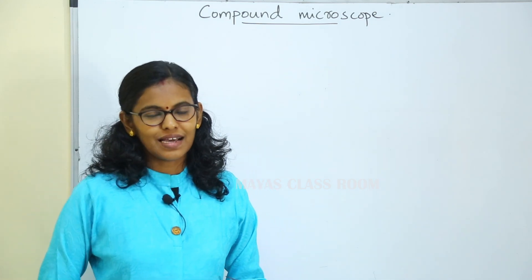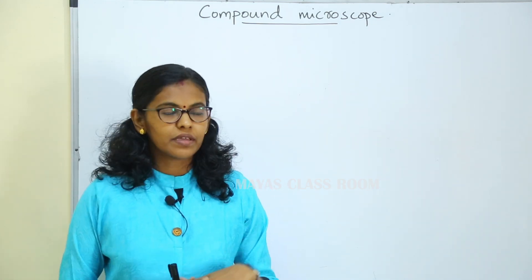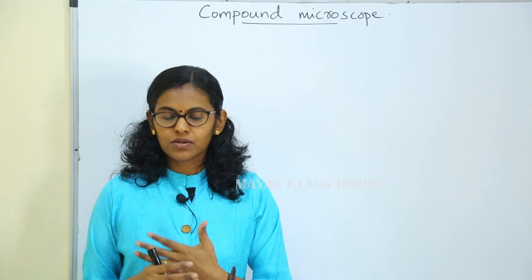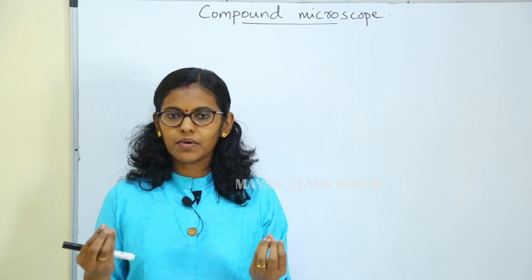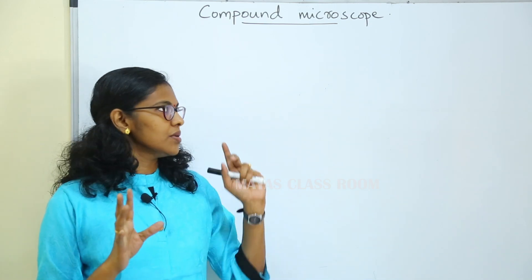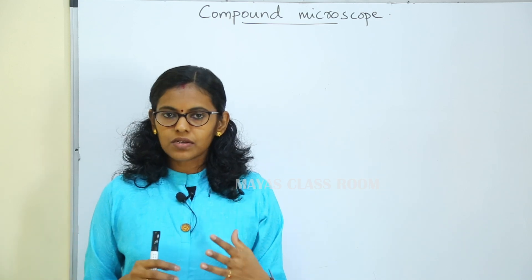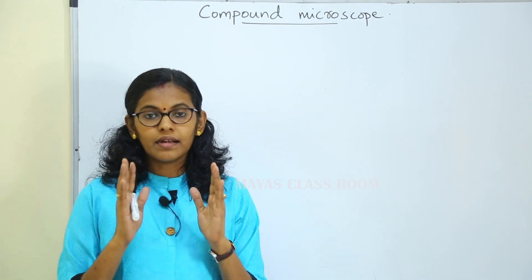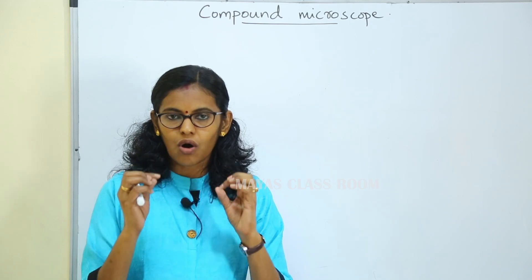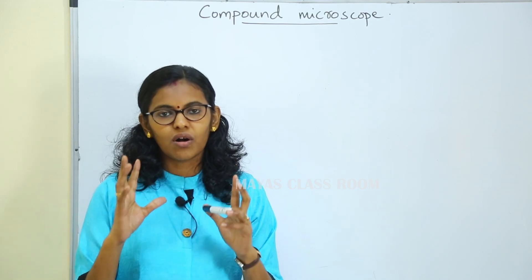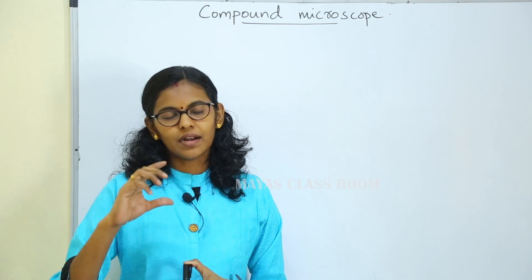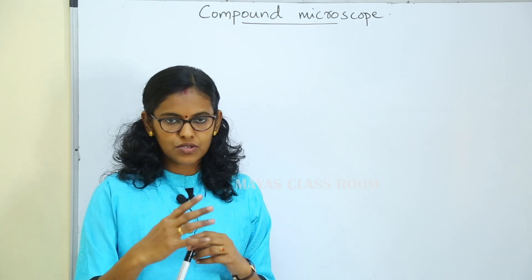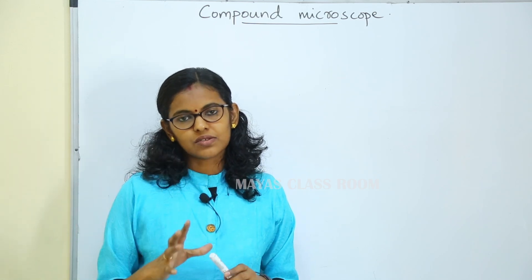Hello everyone, welcome to another class of physics. We are going to discuss the topic of compound microscope. A compound microscope has two convex lenses — an objective lens and an eyepiece — each made of a convex lens, fixed in two coaxial tubes. That is known as a compound microscope.